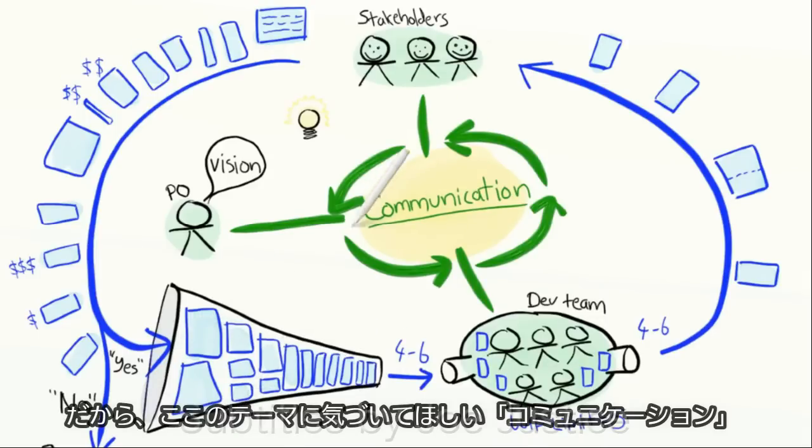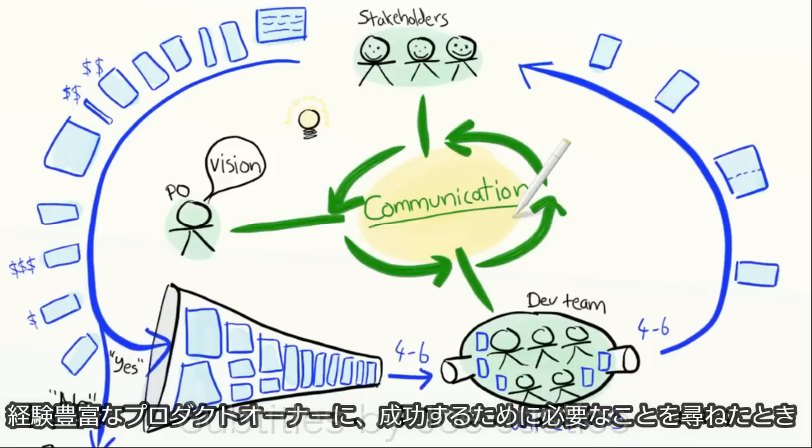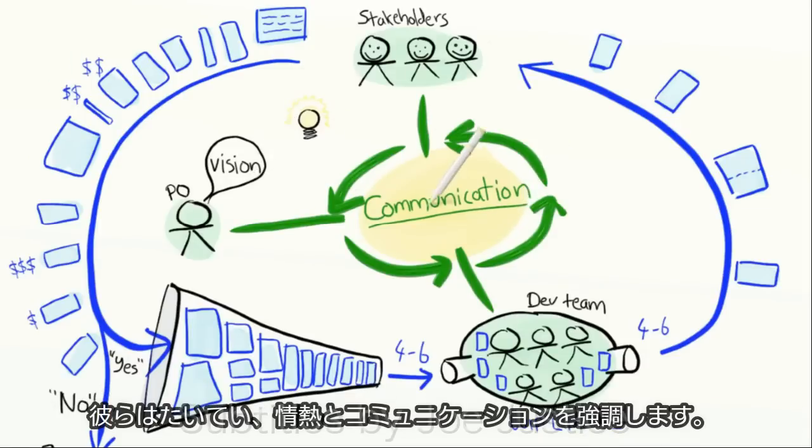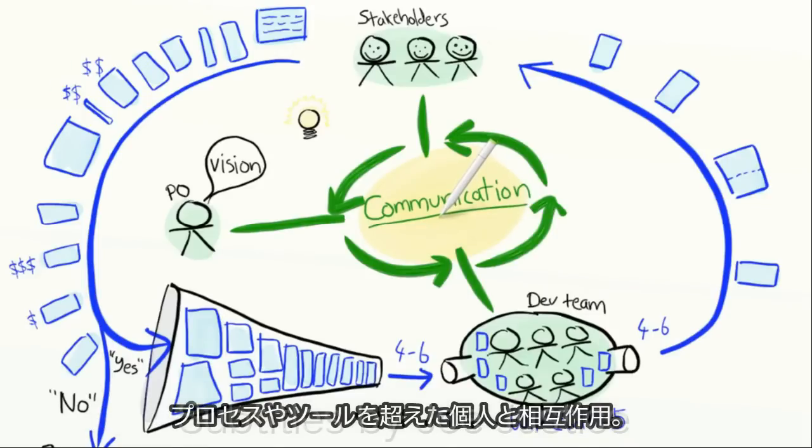So I hope you're noticing the theme here. Communication. Product ownership is really all about communication. When I ask experienced product owners what it takes to succeed, they usually emphasize passion and communication. So it's no coincidence that the first principle of the Agile manifesto is individuals and interactions over processes and tools.